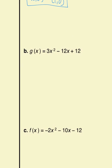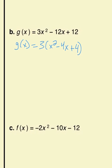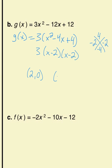Example B: first factor out what the terms have in common — they all have a 3. Factoring out 3 gives 3(x² - 4x + 4). Now I have a trinomial without a leading coefficient. Magic numbers: multiply to 4, add to -4 — that's -2 and -2. Factored form is 3(x - 2)(x - 2). The zeros are both x = 2, so (2, 0) and (2, 0).